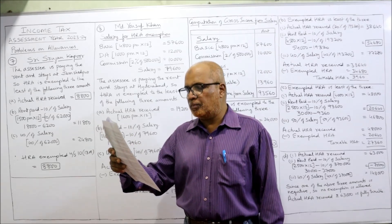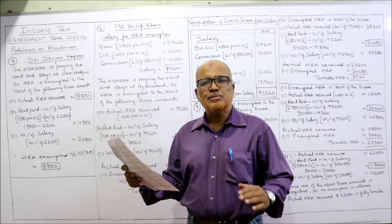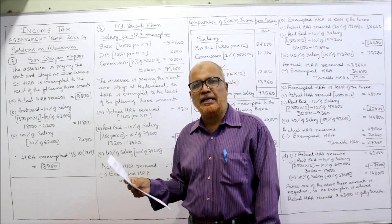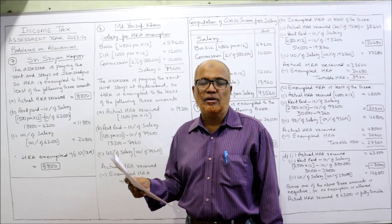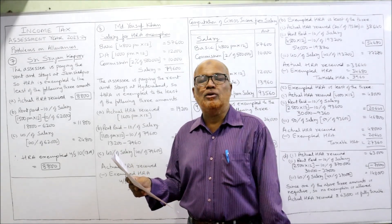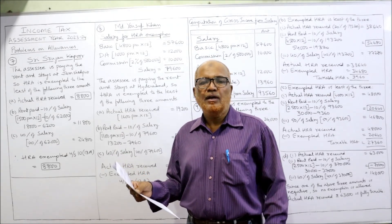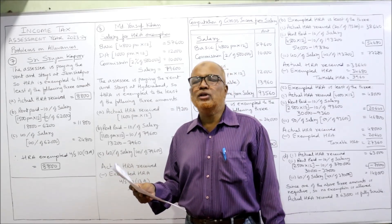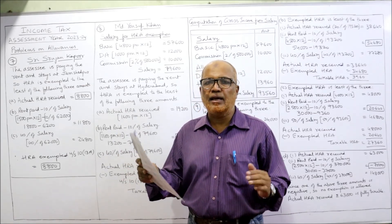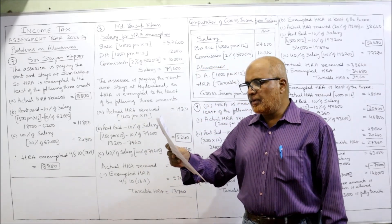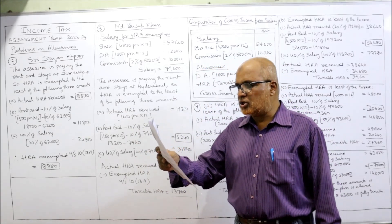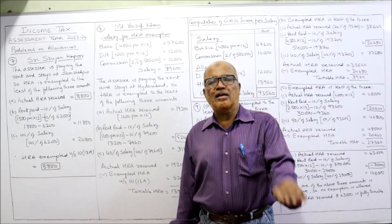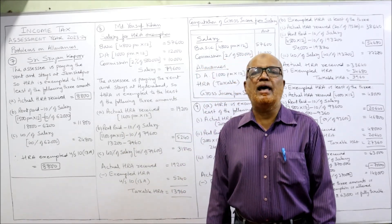He also receives ₹12,000 as entertainment allowance. He pays a monthly rent of ₹1,500 and an electricity bill of ₹300 per month. Since he is paying rent, he gets exemption under Section 10(13A). Electricity bills should not be considered — it is payment for electricity services, not rent. We must determine the HRA exemption. First, we check eligibility.